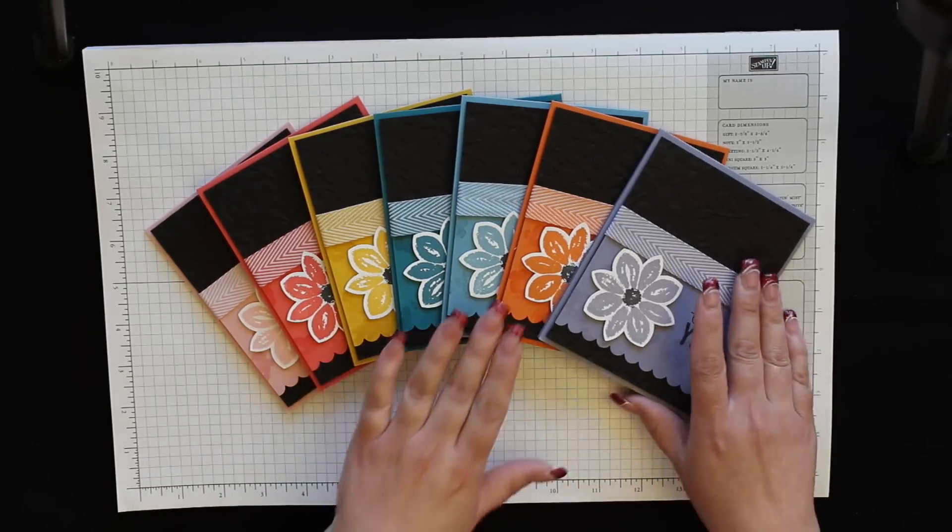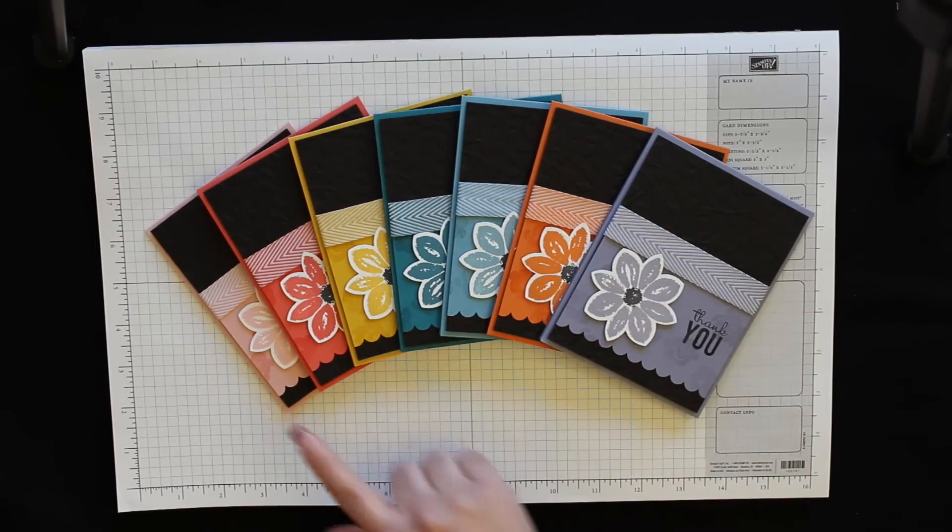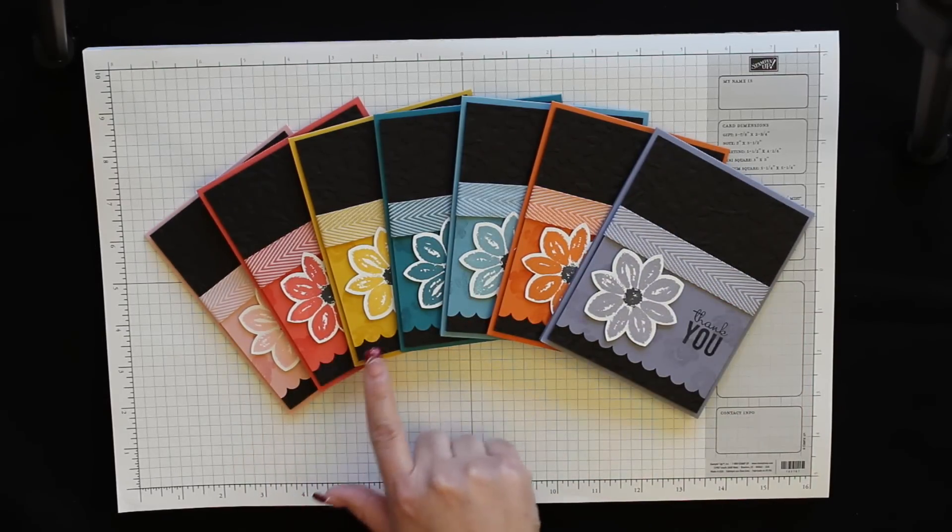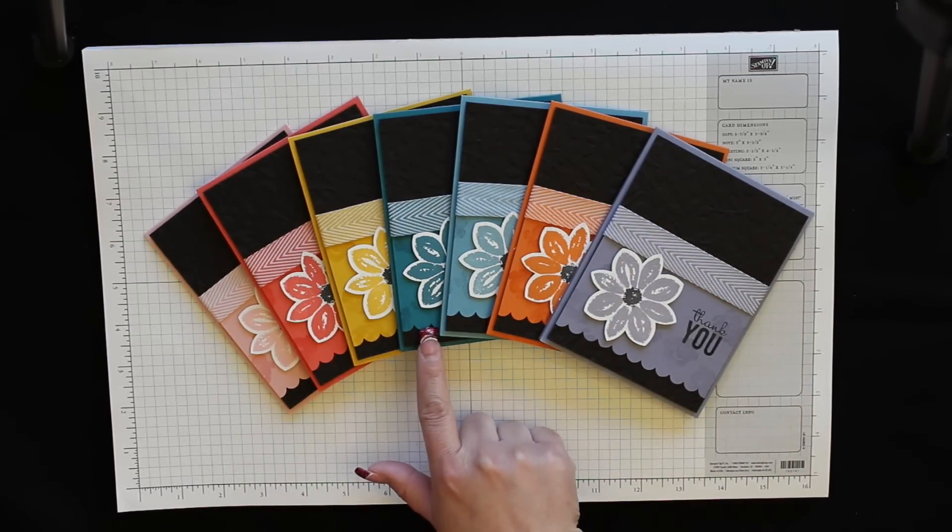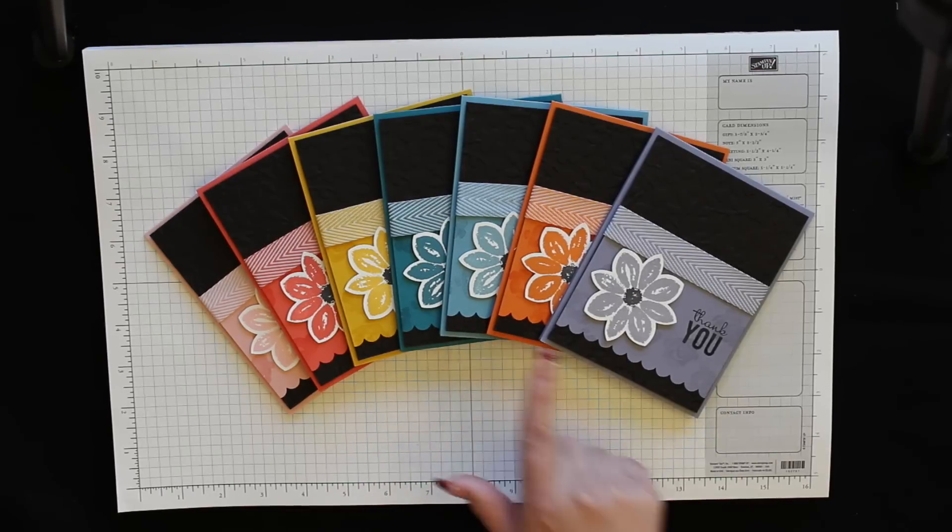This set all coordinates, they all look the same, I just use different colors on them. I have Blushing Bride, Calypso Coral, Crushed Curry, Island Indigo, Marina Mist, Pumpkin Pie, and Wisteria Wonder.